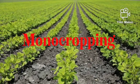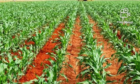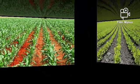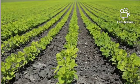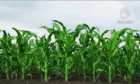What is monocropping? Monocropping is the act or the system of growing only one type of crop — such as maize or cowpea — on a piece of land. Only one crop is cultivated on a piece of land at a time. Another word for this type of cropping system is sole cropping. The principle is that only one type of crop is planted at a time in a farmland.